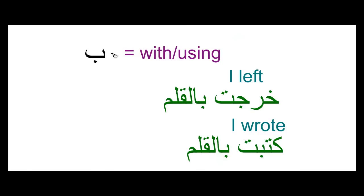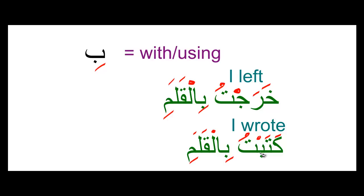The second one is bi, and bi means 'with' or 'using.' For example, kharajtu bil-qalami — kharajtu means I left — I left with the pen. Again, kasra because of the ba, but only one kasra because qalam has alif laam. Next we have katabtu bil-qalami: I wrote using the pen.